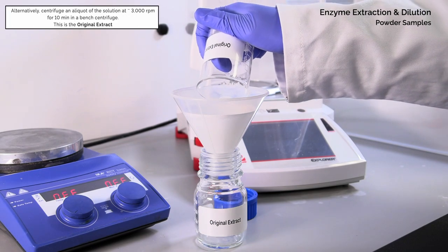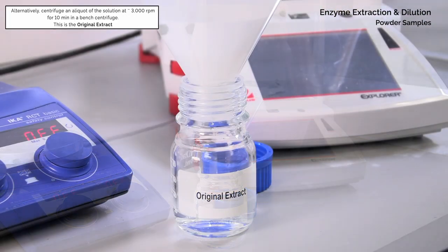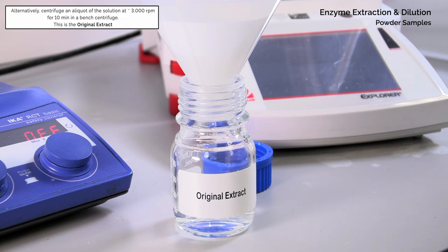Alternatively, centrifuge an aliquot of the solution at approximately 3000 rpm for 10 minutes in a bench centrifuge. This is termed the original extract.